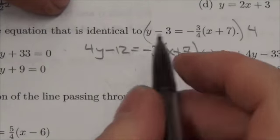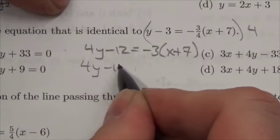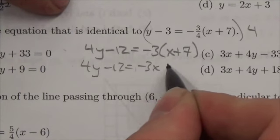Now I'm going to distribute that negative 3 through. So 4y minus 12 is equal to negative 3x minus 21.